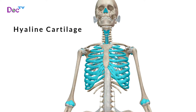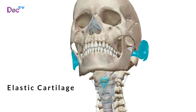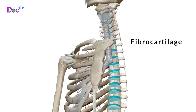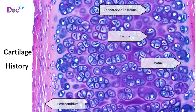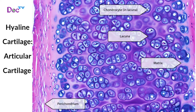Hyaline cartilage has an amorphous and rigid extracellular matrix formed by chondroblasts with firmly bound collagen fibers, some elastic fibers, tissue fluid and small groups of chondrocytes in lacunae. It forms most of the embryonic skeleton as well as the costal cartilages that connect the ribs to the sternum, the articular cartilage that covers the ends of long bones and absorbs compression at joints, and the cartilages that support the nose, trachea and larynx.